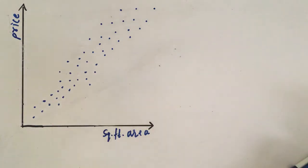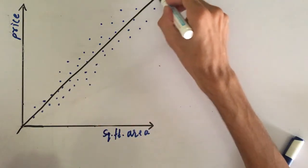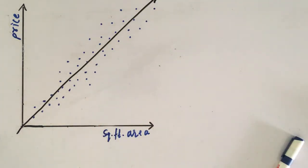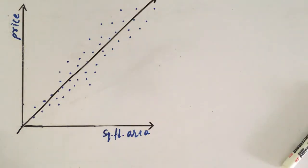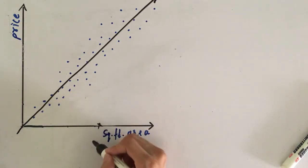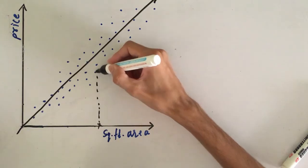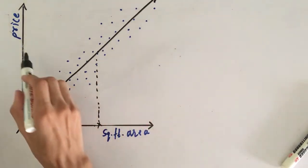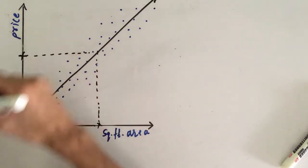The way we can do it is by drawing an approximate straight line that fits our data set like this. This straight line fits our data set. Now if we want to find the price of the new house whose square foot area is let's say here, we can find its price by going to this line and then going here. Bingo! We have the price of that house.